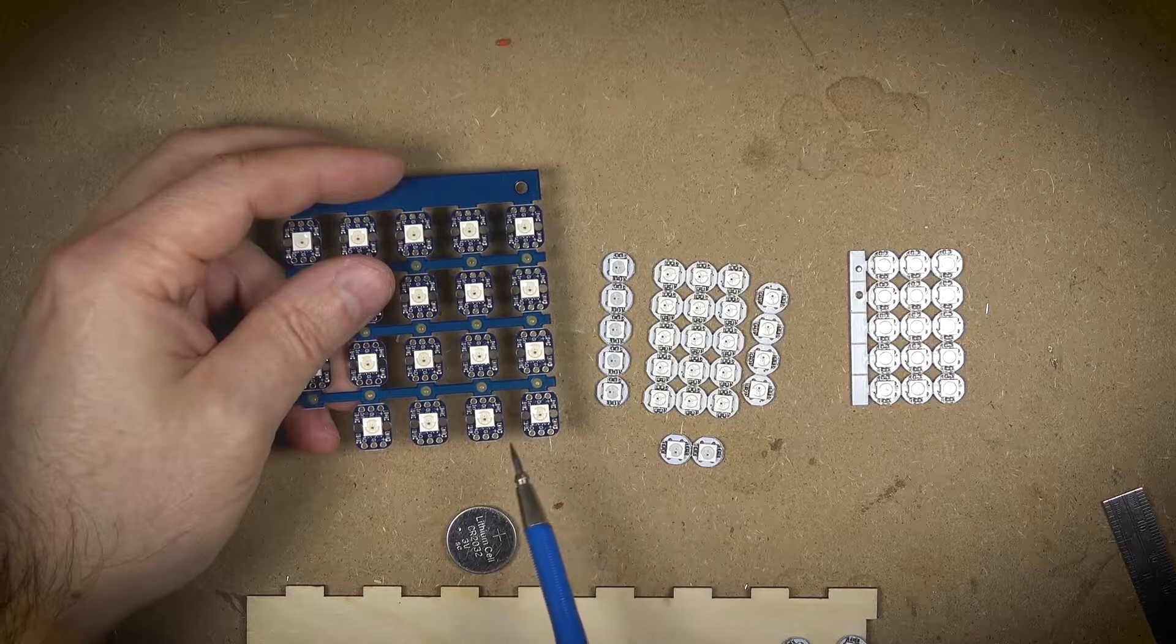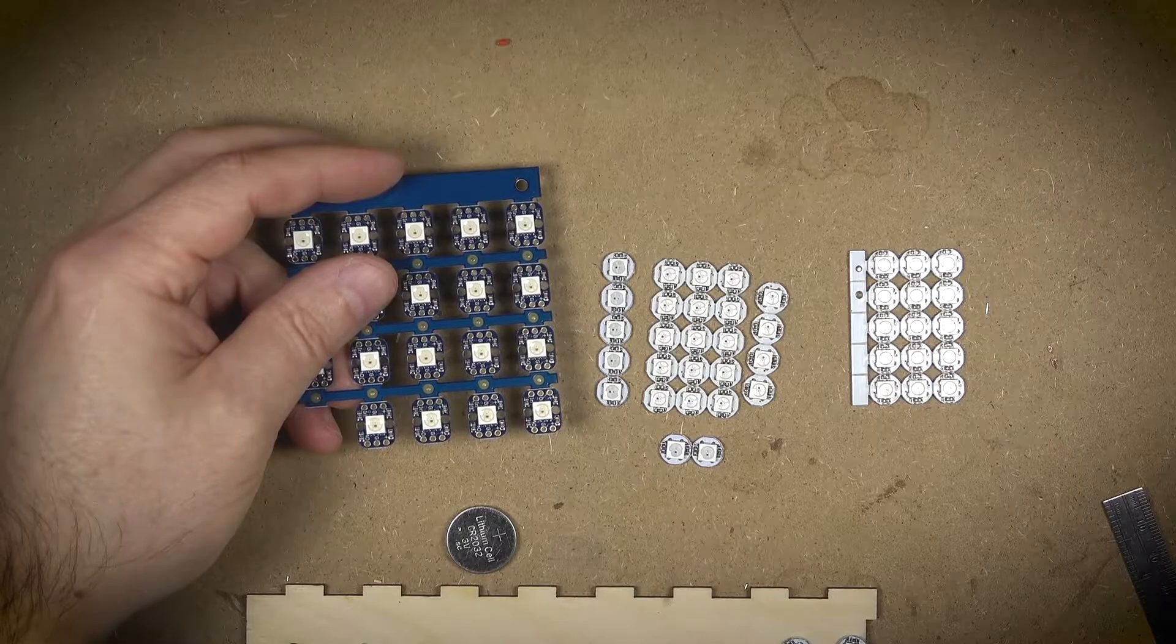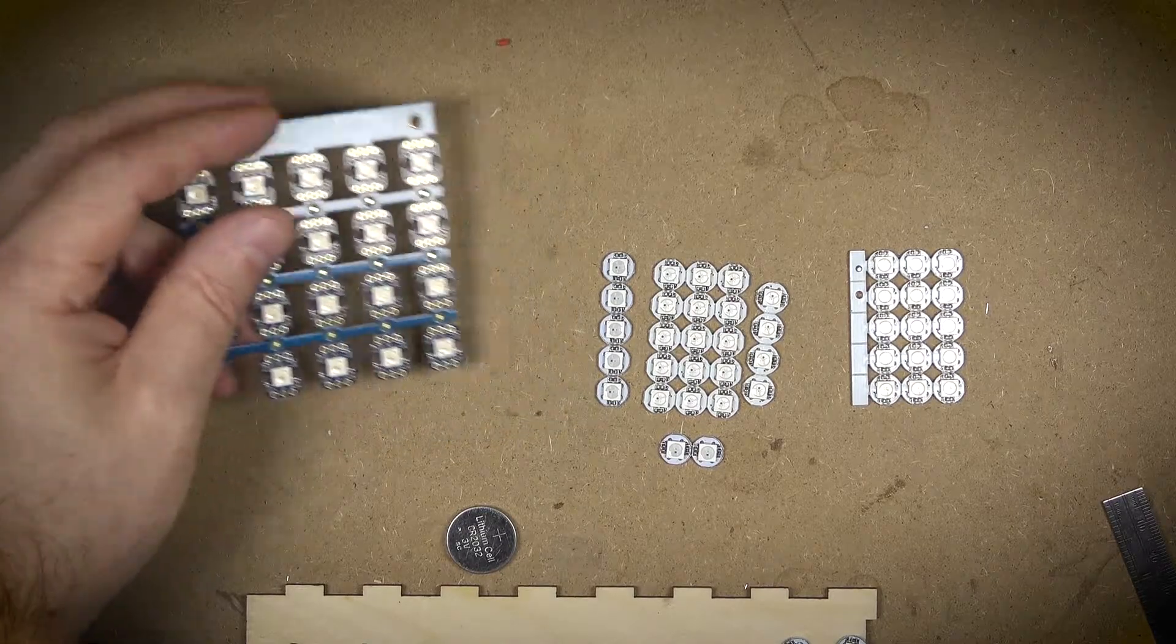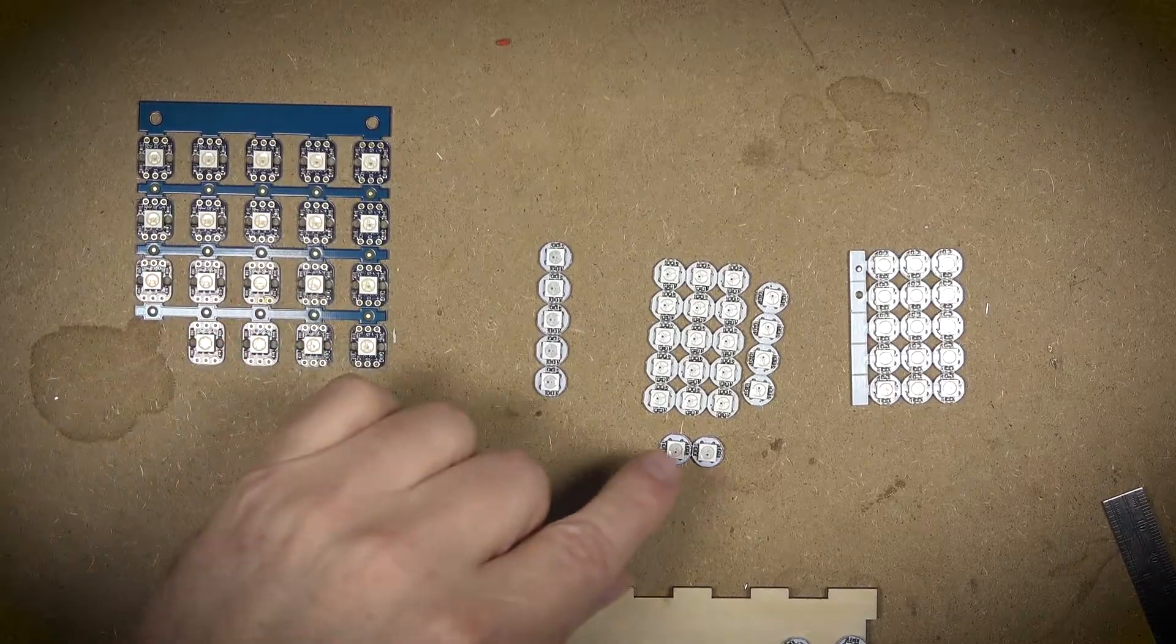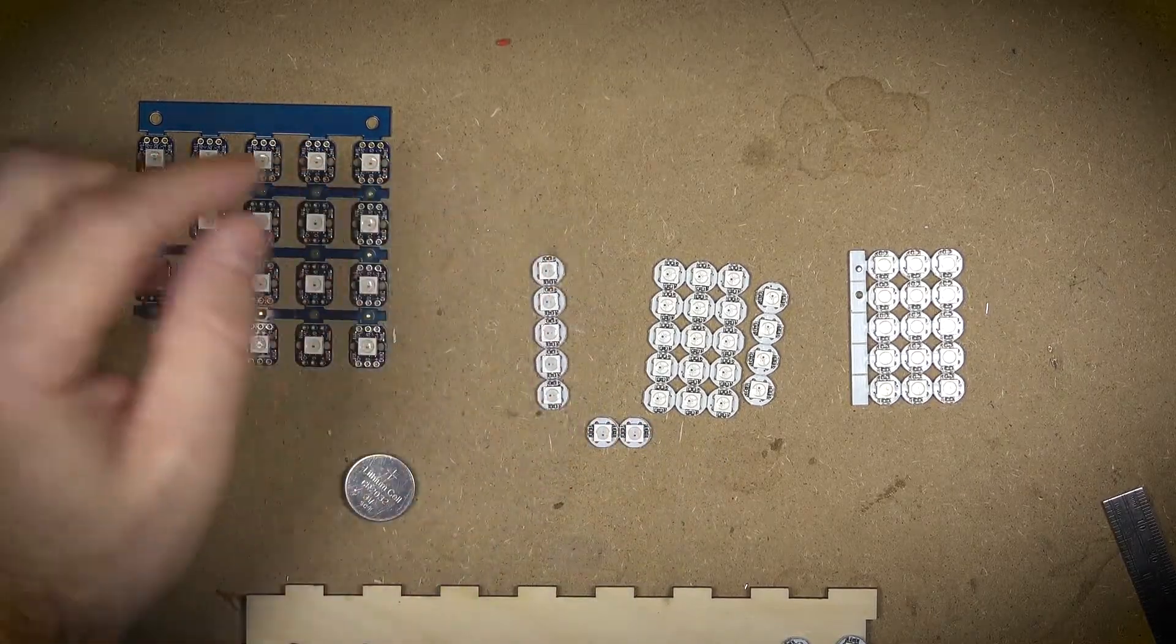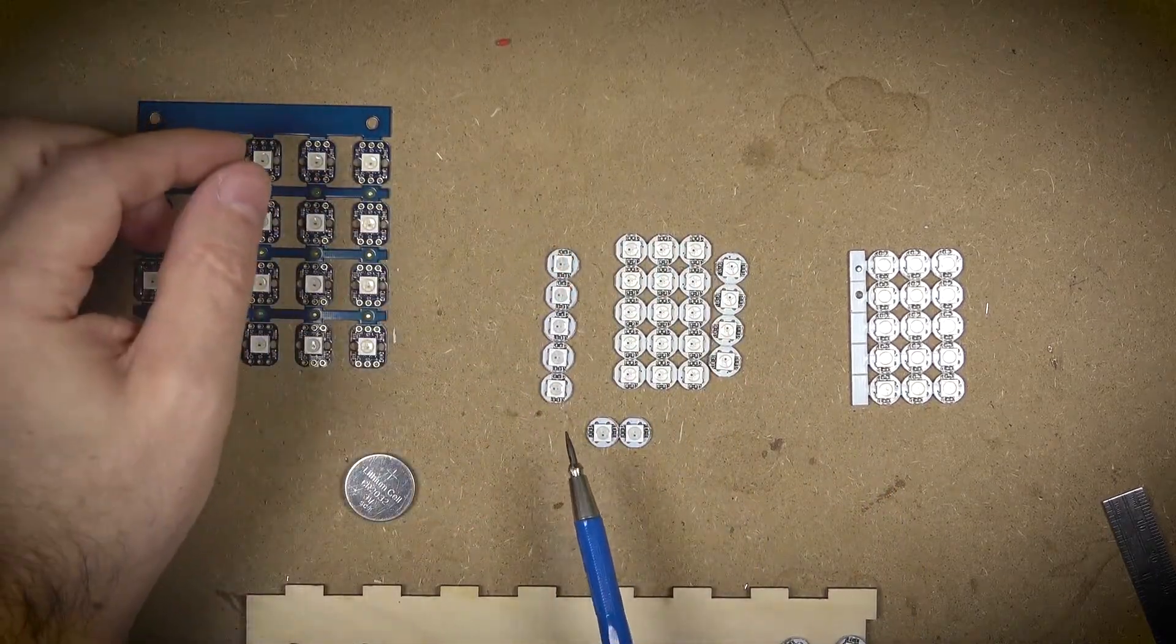The nice thing about these is a strand of them can be controlled through three wires and we can basically string these and control each pixel individually for color, brightness, and then some other blinking special effects, flickering, things like that.